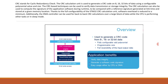The runtime signature is compared with a reference signature generated at link time and stored at a given memory location. Thanks to the full configurability of the STM32 CRC calculation unit, software overhead is reduced to a minimum. Additionally, the DMA controller can be used for back-to-back CRC calculation over a large block of data while the CPU performs other tasks in sleep mode.